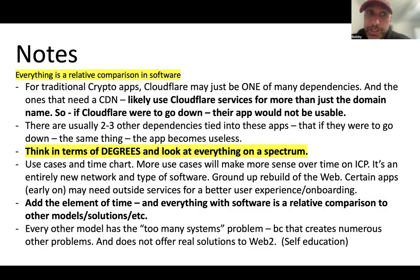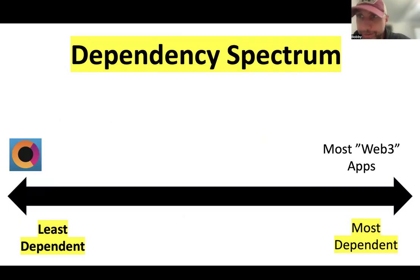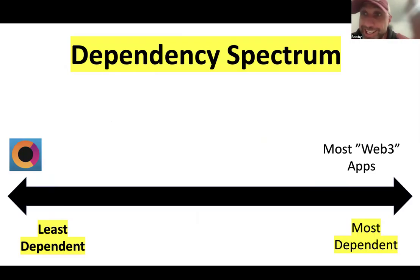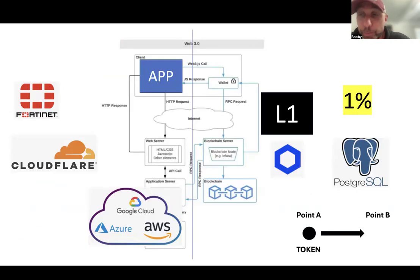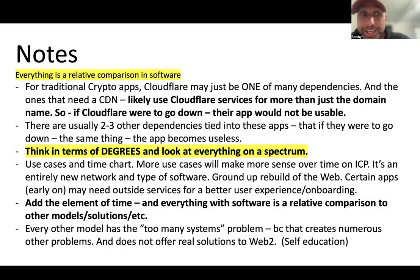Everything in software is a relative comparison to other options. Never look at any one given app or system in a vacuum and start trying to pick it apart without zooming out and looking at all the other options. You might be able to nitpick different things with any given software system. But if you zoom out and it's still an overwhelmingly better, more secure model than everything else, then it's still leading everything else in that context. For traditional crypto apps, Cloudflare may just be one of many dependencies — and that is the case for most of the rest of the space.